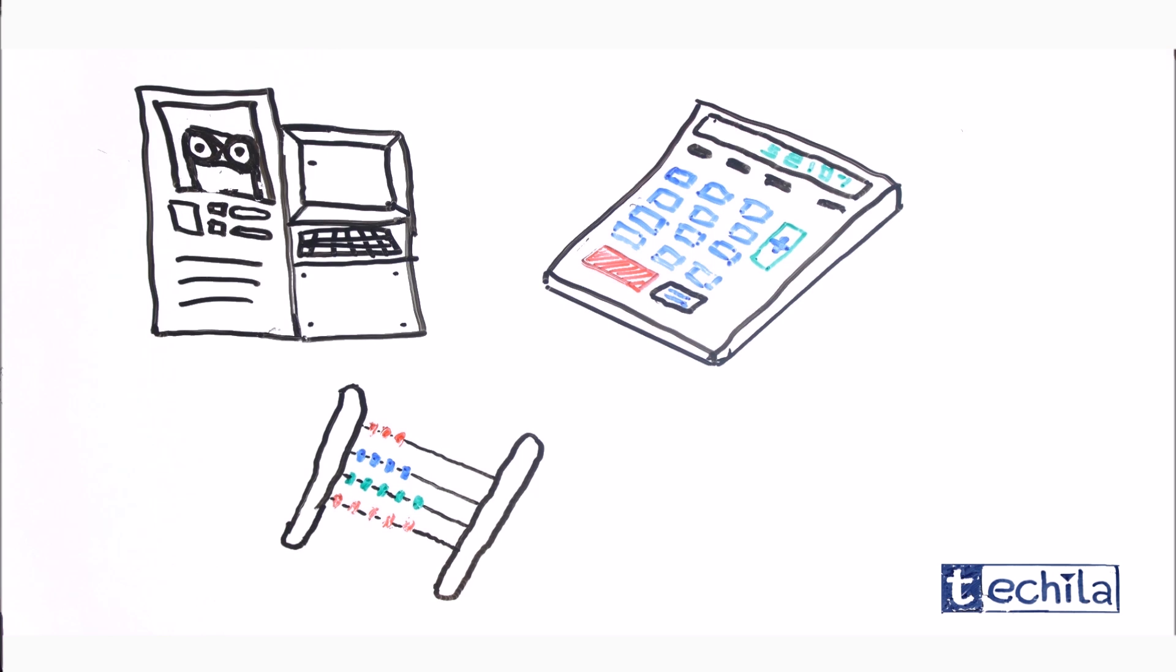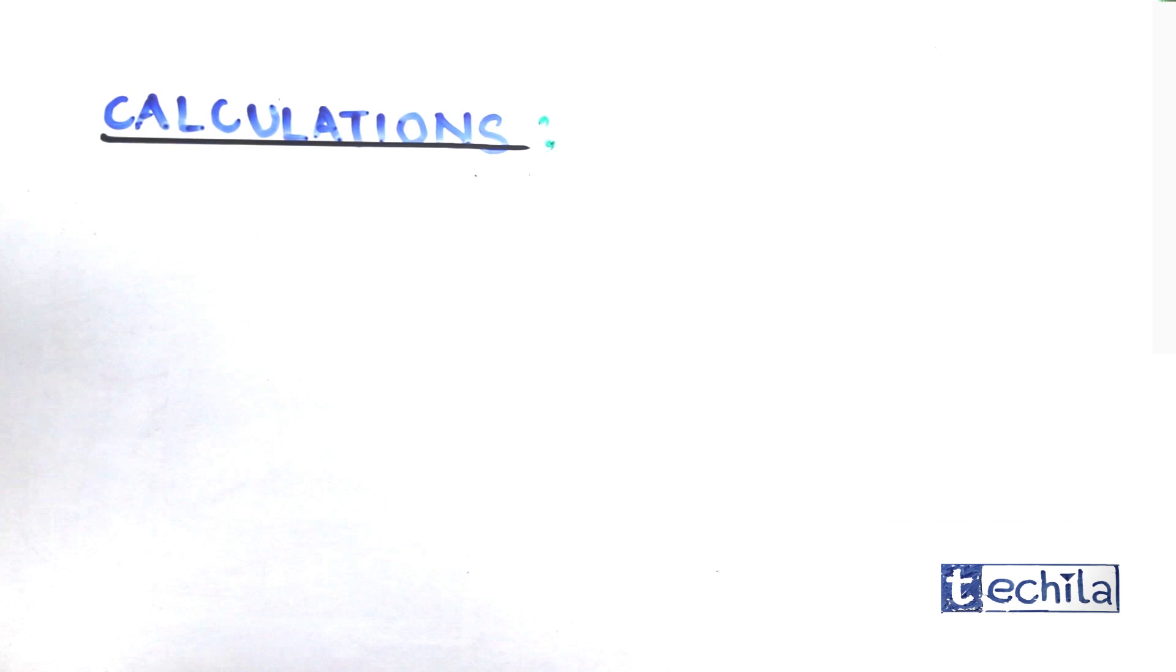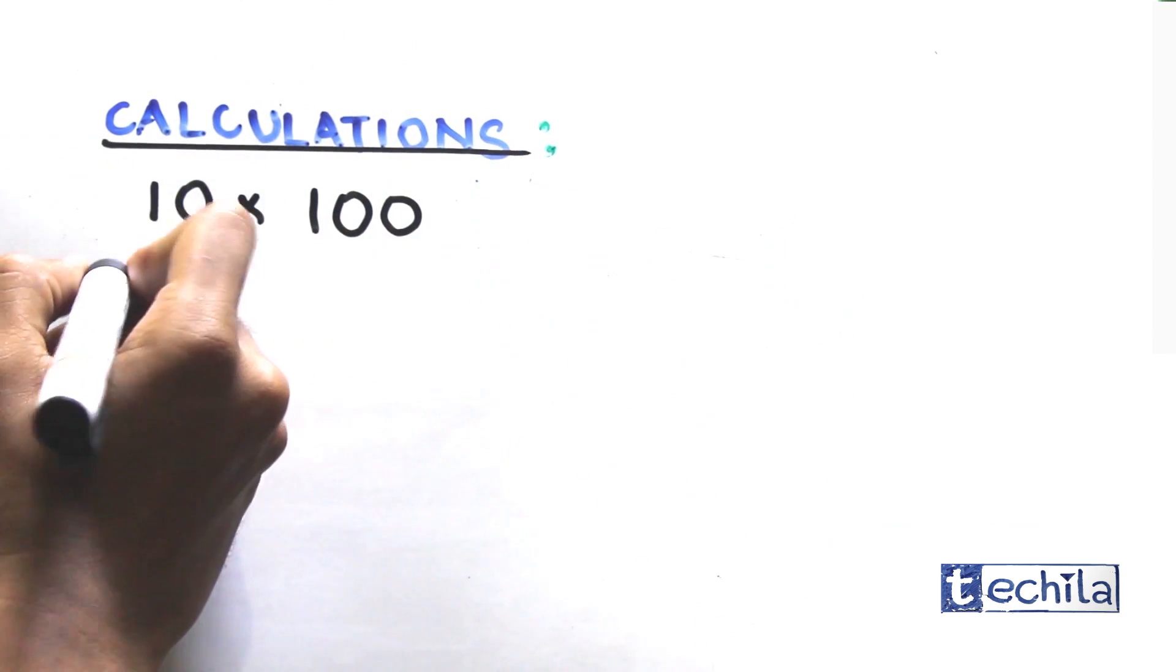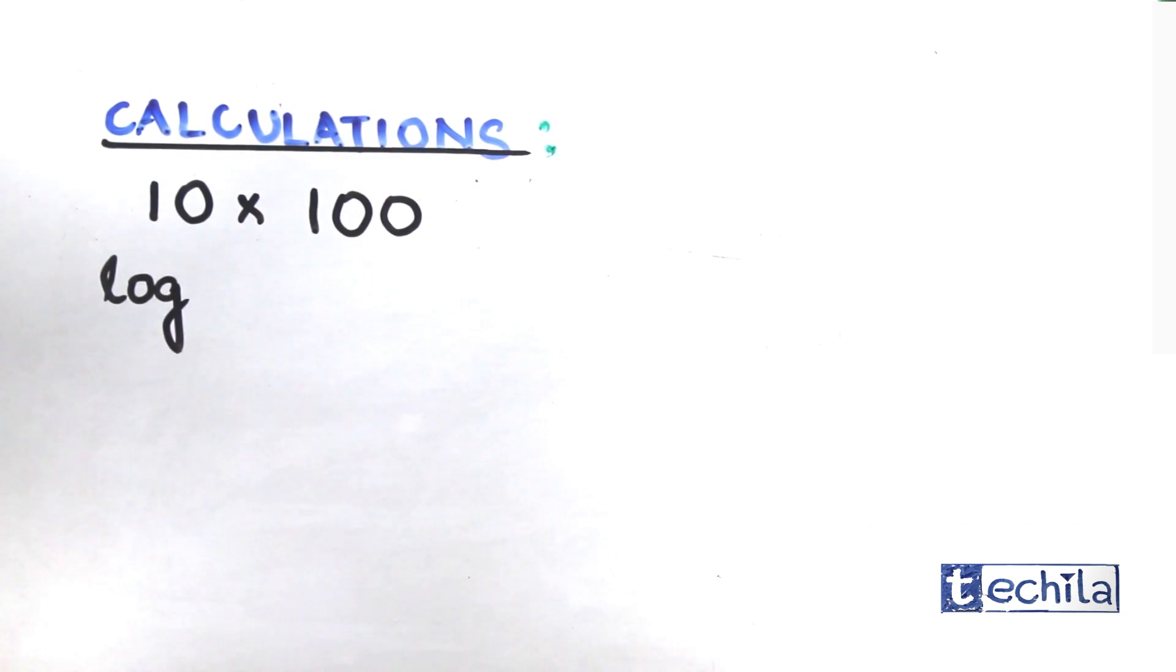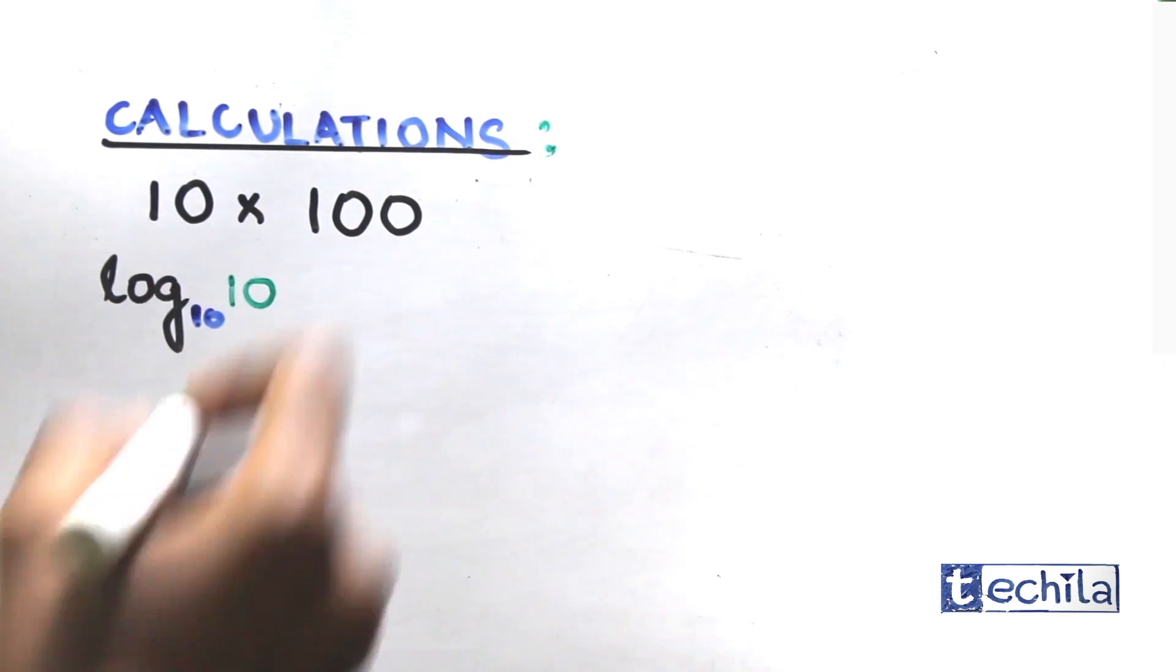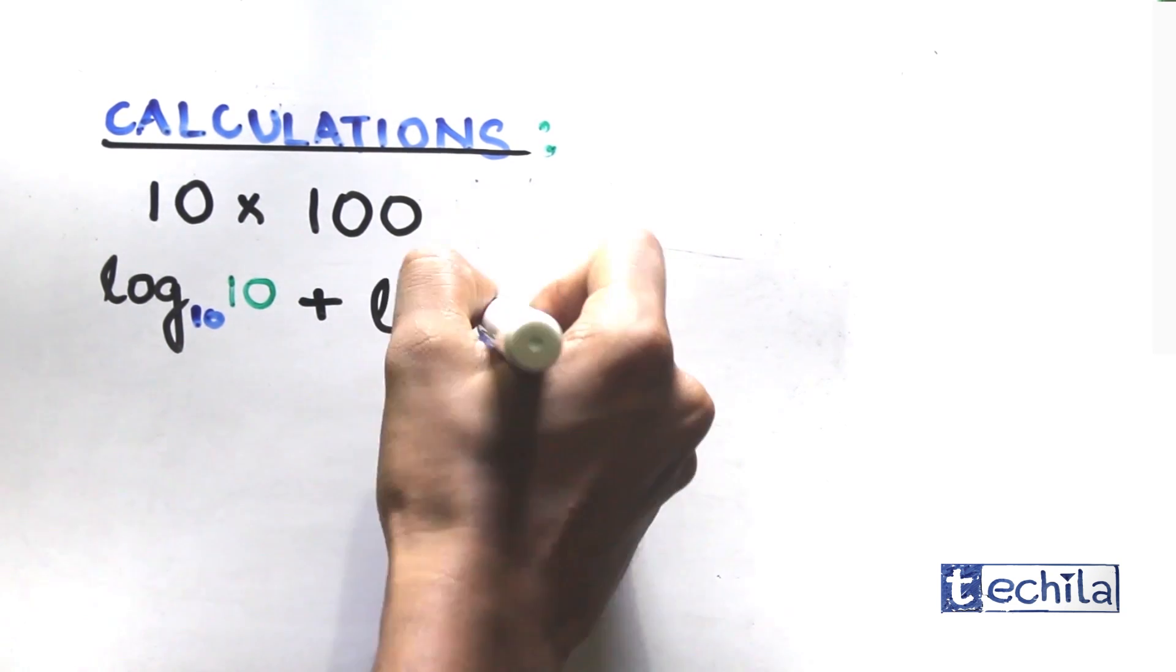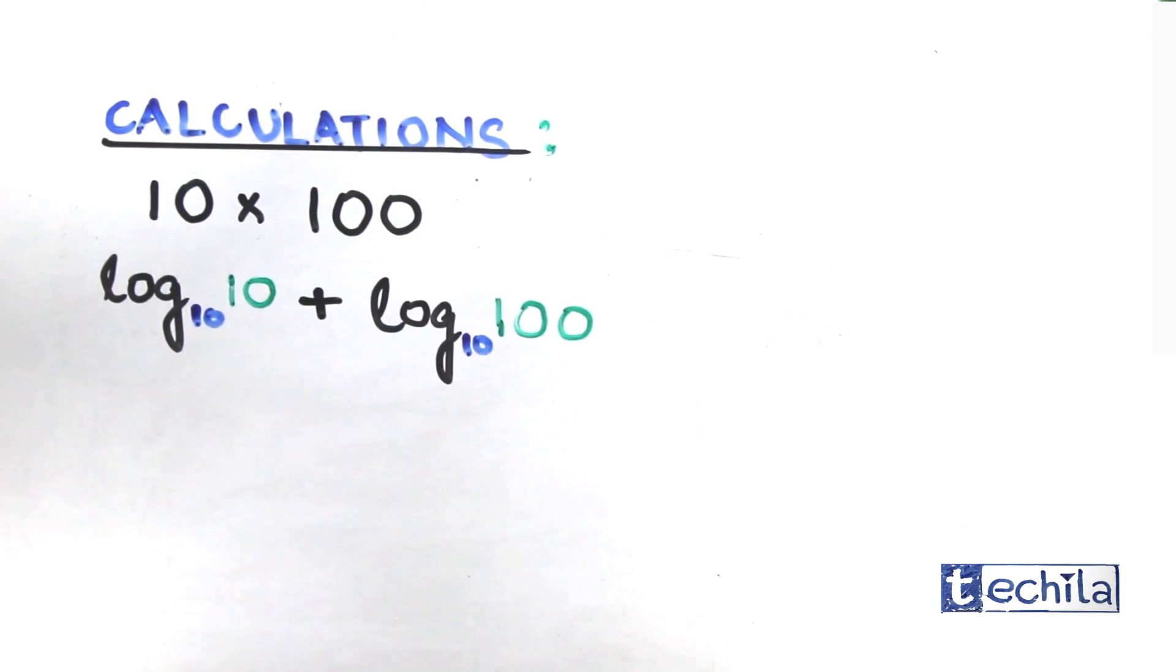Let us take a simple example. Consider multiplying 10 with 100. Here we are dealing with a decimal number system, hence it is convenient for us to take the base as 10. Now taking log with the base 10 of this product, we get: since logarithm represents the power of base, log with the base 10 of 10 into 100 can be written as log with the base 10 of 10 plus log with the base 10 of 100.